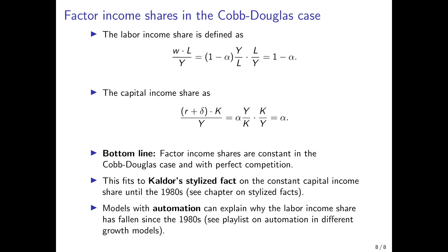Because automation is mainly what we observed since the 1980s — before that, the number of industrial robots worldwide was negligible, and only since then it has been increasing. Since robots are a substitute for workers but the income that robots earn goes to the capital owners — the owners of the robot — this new dynamic can explain why the labor income share may have gone down and the capital income share increased.